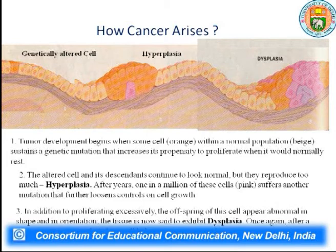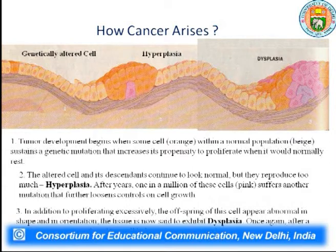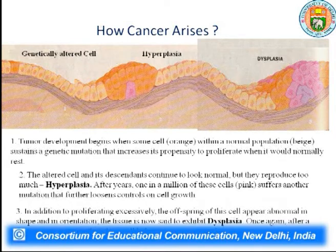A second mutation occurs, represented by a pink cell. This further loosens cell cycle control, causing even more proliferation. Until hyperplasia, no patient knows they are carrying cancer. Then a third mutation causes dysplasia — this is dangerous because the cell has not only lost cell cycle controls but also accumulates many proteins due to excessive proliferation, causing the cell size to increase significantly compared to the first mutation cell.